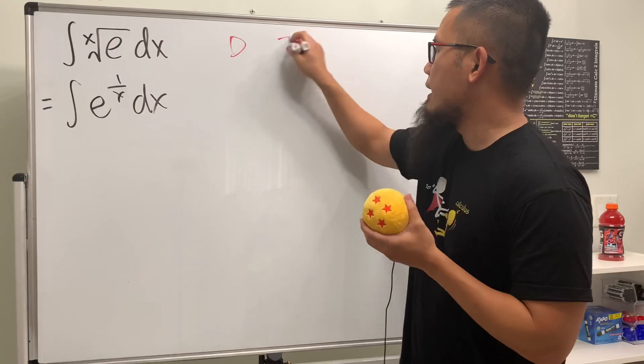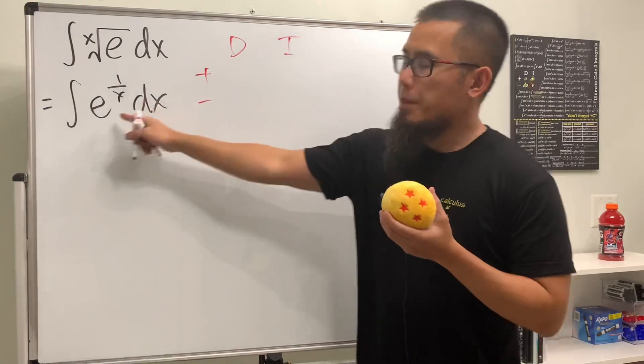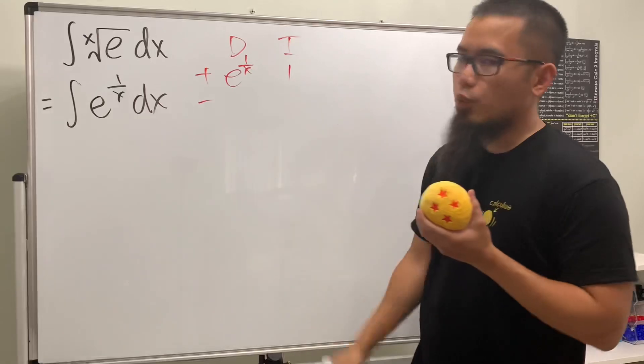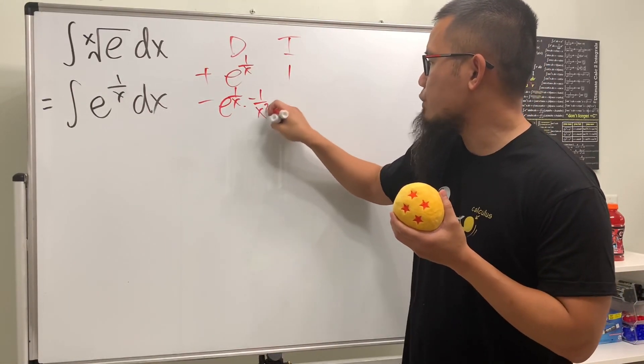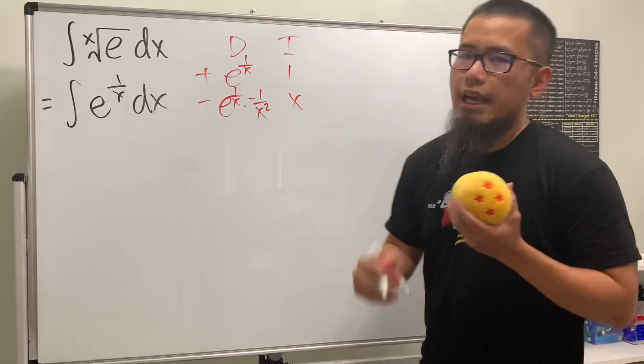So put down the D and I, and then plus minus right here, and we'll be differentiating. Yes, e to the one over x will be integrating one. Do this, we get e to the one over x times negative one over x squared. And do that, we get x right here.